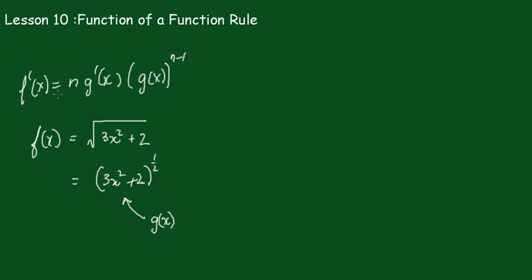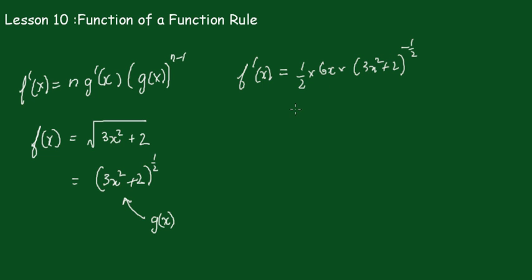Applying the rule then, we can write straight down f'(x) equals... The n here is the one half, so the half comes down multiplied by the derivative of what's inside the brackets. The derivative of 3x² + 2 is simply 6x. Then we rewrite the function g(x), which is 3x² + 2, but now the power is reduced by 1, so it's minus one half.